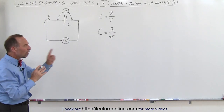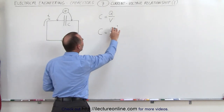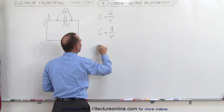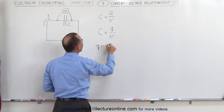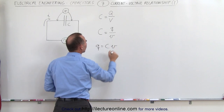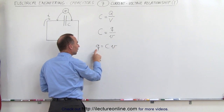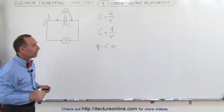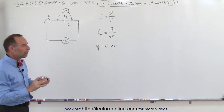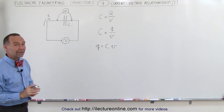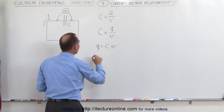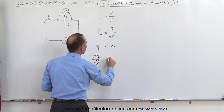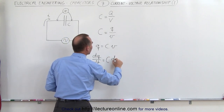If we now solve that equation for Q, notice that Q is a function of time and V is a function of time. Q now becomes equal to C, the capacitance, times the voltage. Q is a variable, voltage is a variable, and C, the capacitance, is a constant. If we now take the derivative of both sides of the equation with respect to time, we get dQ/dt is equal to the capacitance times dV/dt.